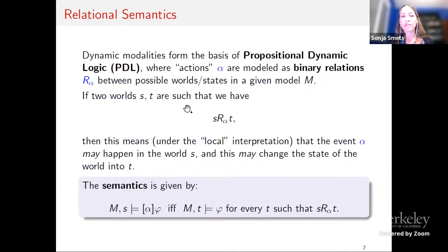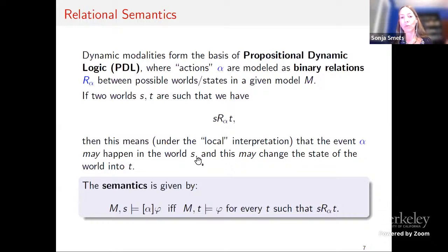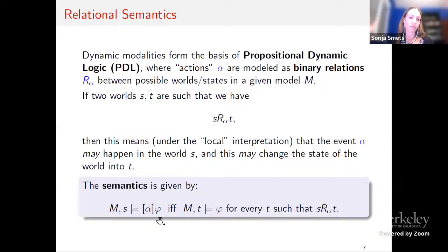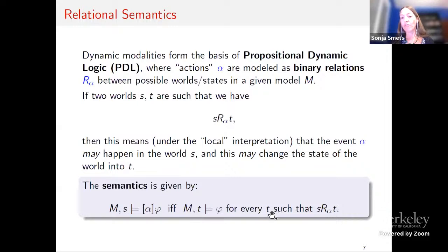If two worlds S and T are such that I can go from S by action alpha to T, this means event alpha may happen in world S and change it into new state T. Formally, box alpha phi is true in state S of model M if and only if phi is true in every state T that is related to S by action alpha.